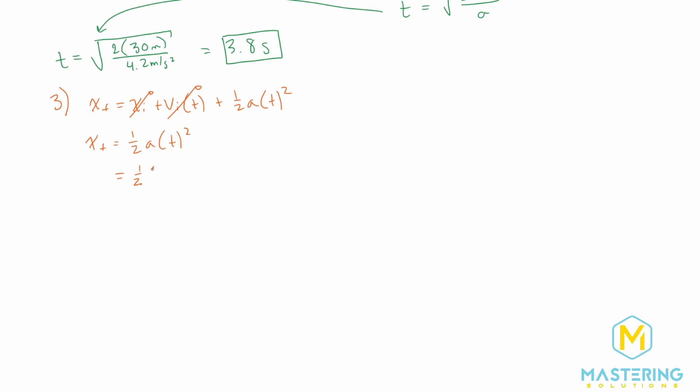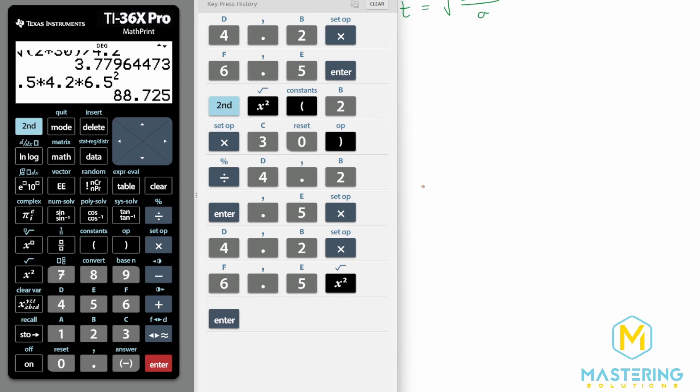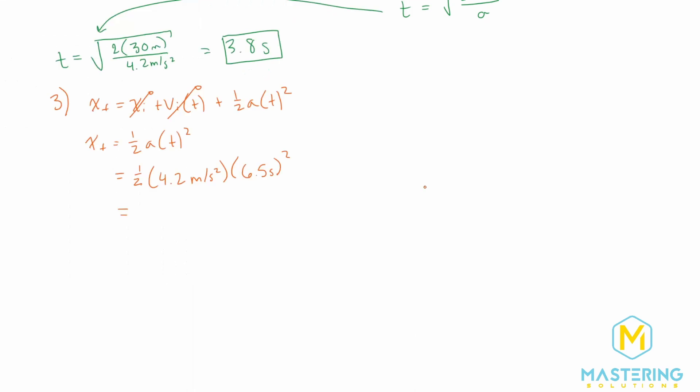So one half the acceleration we said was 4.2 meters per second squared times the time of 6.5 seconds squared will give us an x final of 0.5 times 4.2 times t squared is 6.5 seconds. So we have 88.725. I'm not going to round that just so that we don't get a rounding error later on. So 88.725 meters. We have a 200 meter dash. So 200 subtracted 88.725 meters.